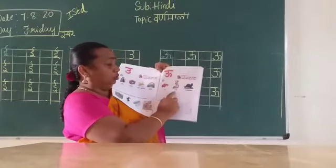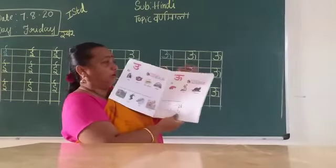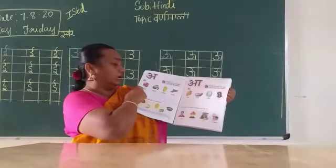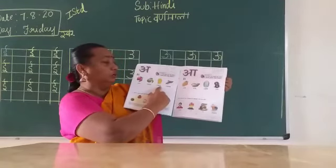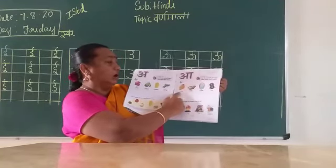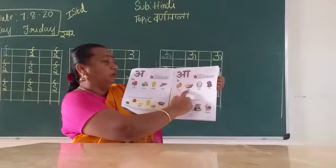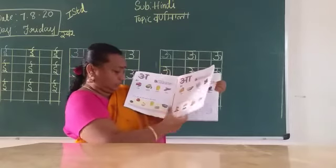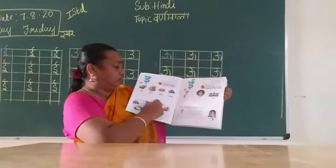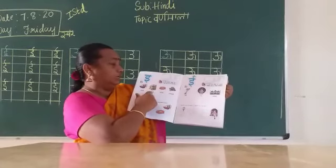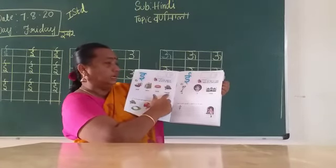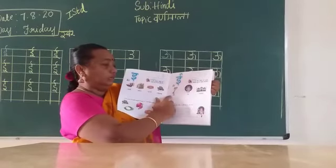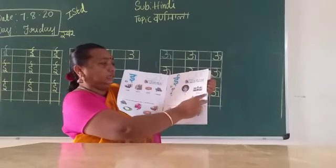U se un, u se upahar, u se udbila. Ase aina, ase achan. Pay number 12. Ese imali, ese imarati, ese ilaiji. Ese ik, ese ik, ese ikga. Ese ik, ese ik, ese ikga.